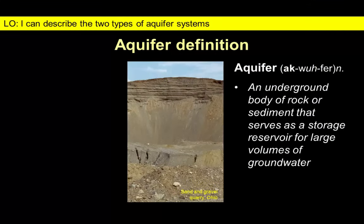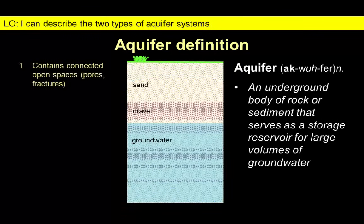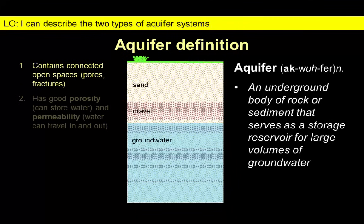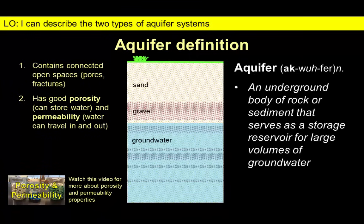Let's start with a definition. An aquifer is an underground body of rock or sediment that serves as a storage reservoir for groundwater. Aquifers are made up of materials that contain interconnected spaces. These spaces are essential as they can both store water and let it easily flow in and out of the aquifer. Depending on where you are located, your local aquifer may be composed of different types of rock or sediment.